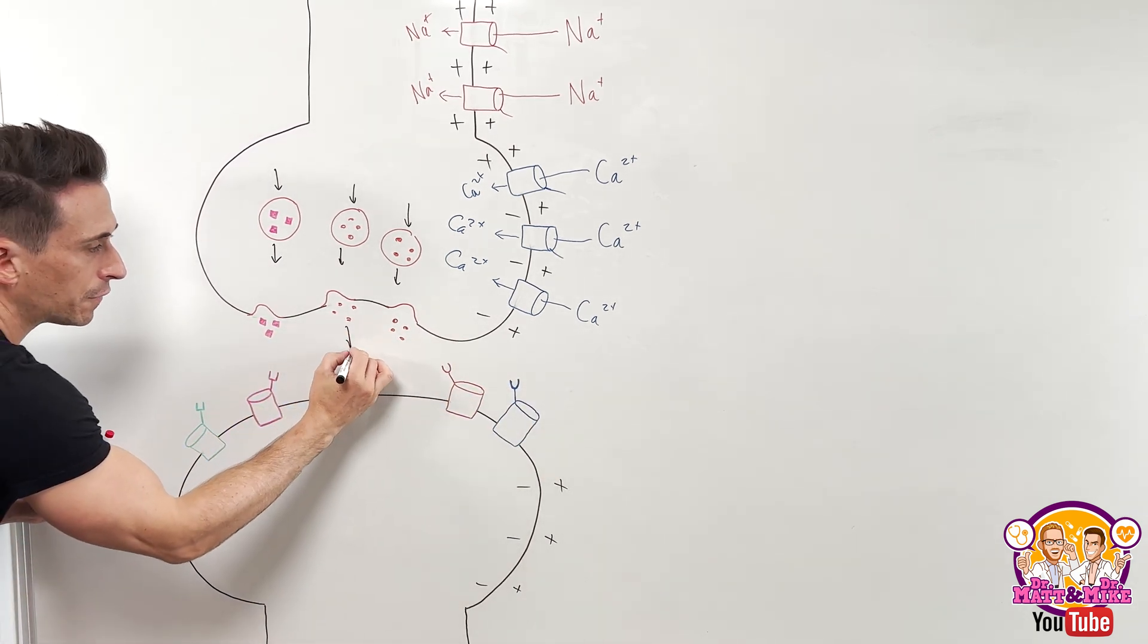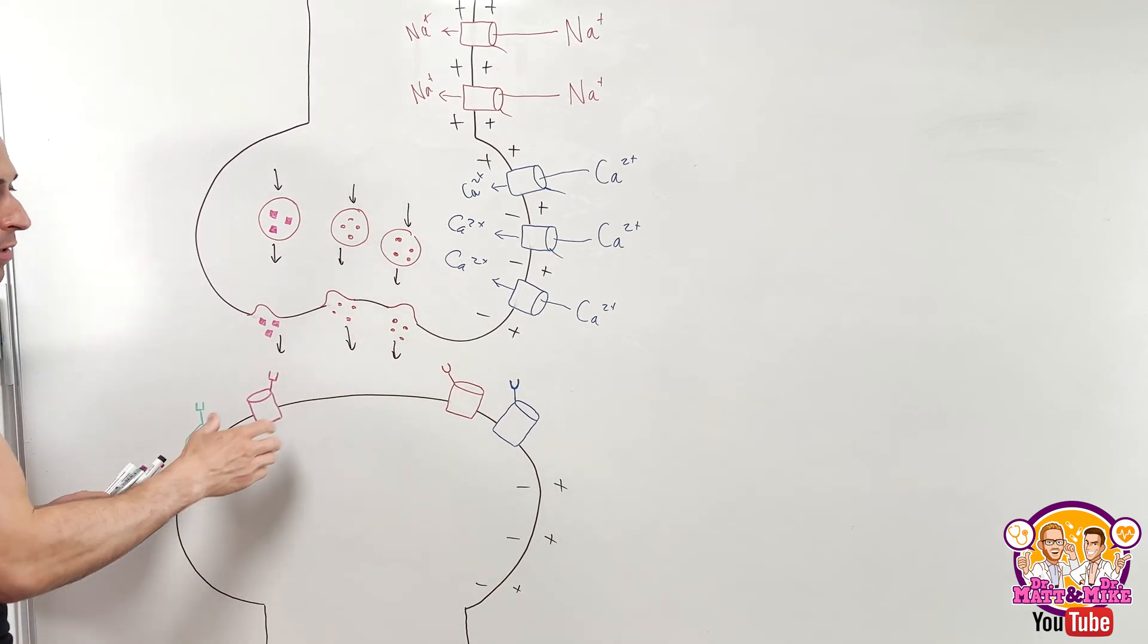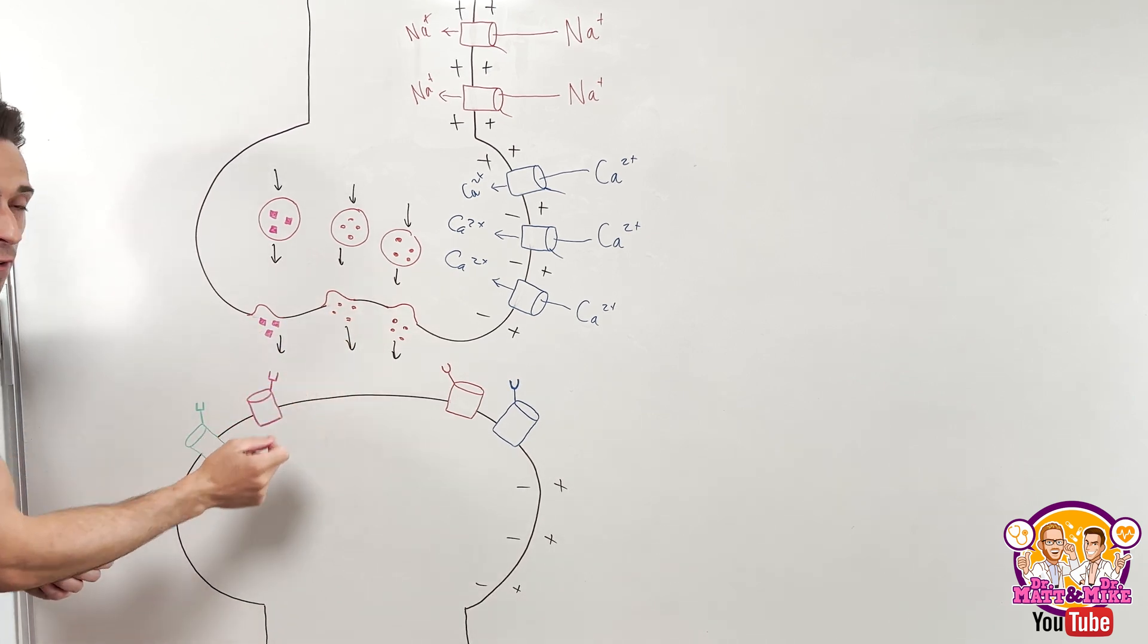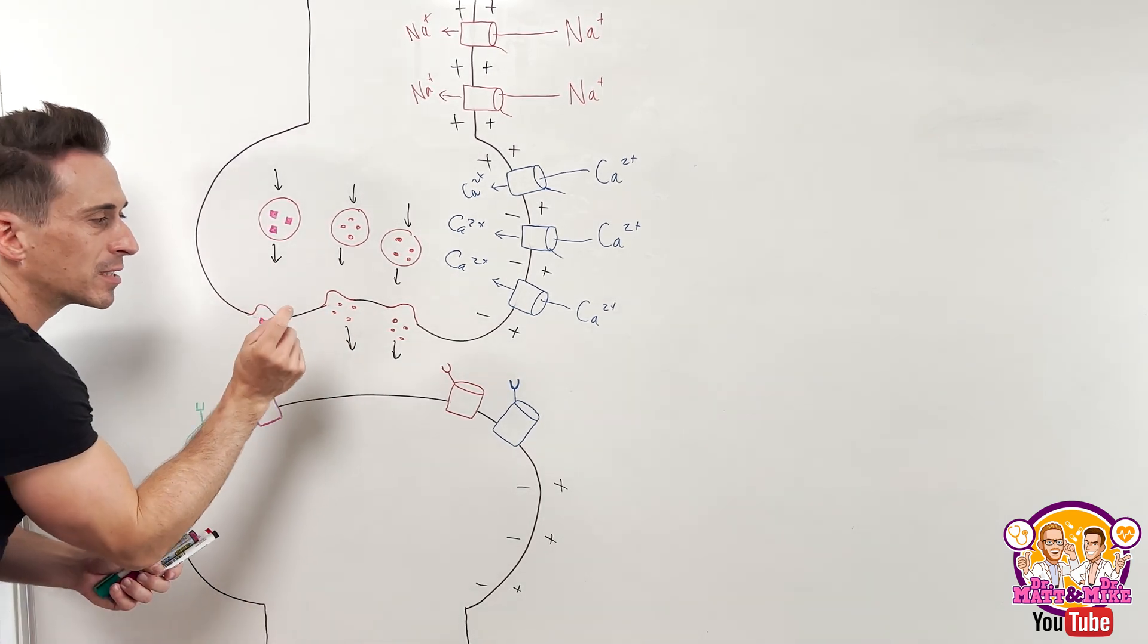And as it diffuses, it goes from its area of high concentration to its area of low concentration. It'll diffuse across the cleft until it binds to a receptor that is specific for it.